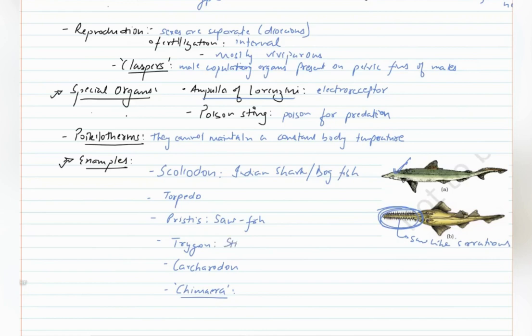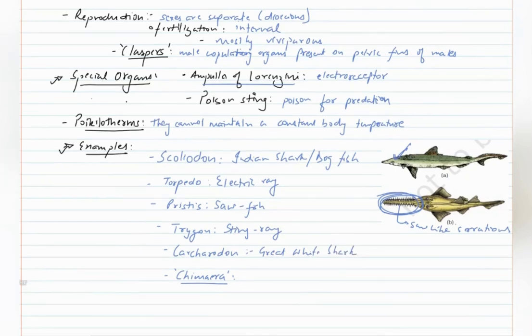Torpedo is known as electric ray because it can produce electricity through Ampulla of Lorenzini. Carcadon is known as great white shark. Now Chimera, it is a special fish because it is a connecting link.